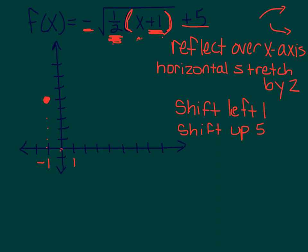If I plug a 1 in, 1 plus 1 is 2, half of 2 is 1, I can take the square root of 1. So the square root of 1 is 1, I negate that, I get negative 1 plus 5 is 4, there. So what happened is my horizontal stretch by 2, usually I would have gone over 1 and up 1. Reflecting it would have taken me over 1 and down 1, but now I have to go over 2 and down 1, because I've stretched it.